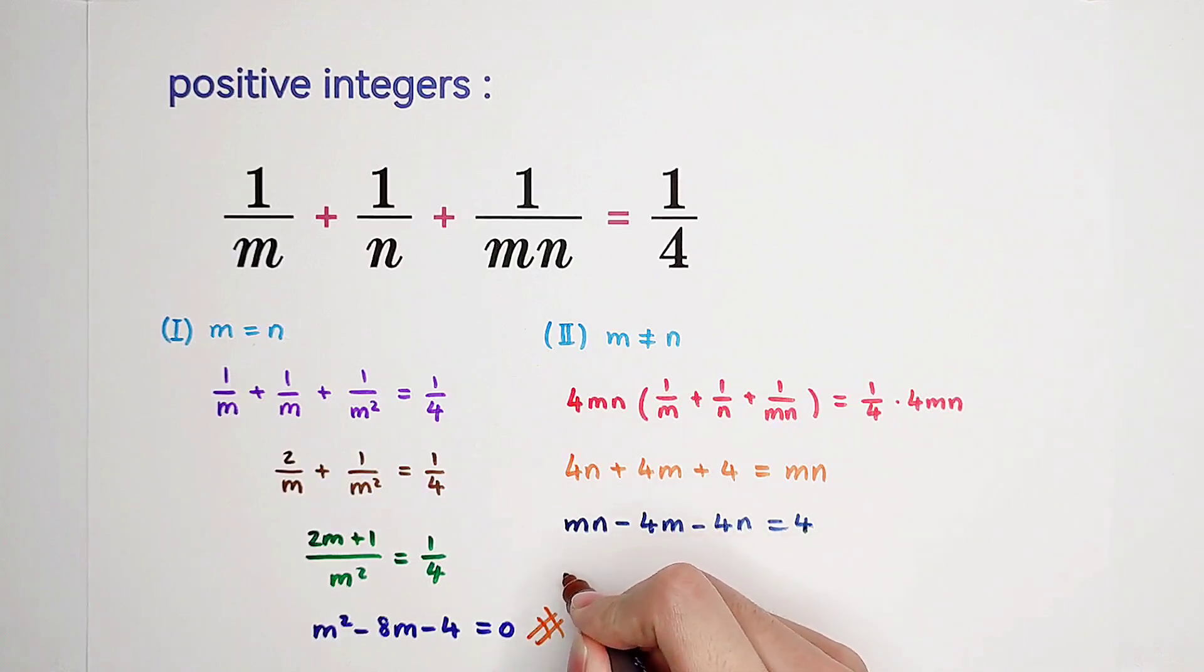Of course we can. Here we can take out m and in the bracket is n minus 4. Because here, we only have a term about n, so we hope that if we take out n minus 4 in the bracket, there will be n minus 4. Therefore, we can take out n minus 4 and we'll end up with a factorization on the left-hand side.